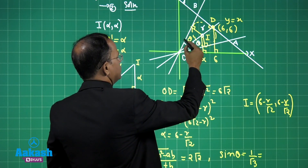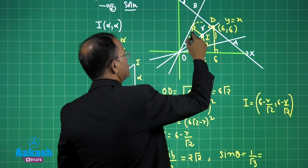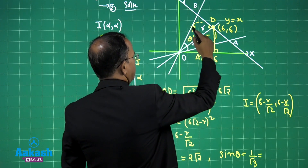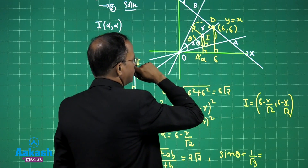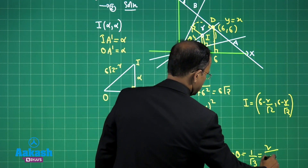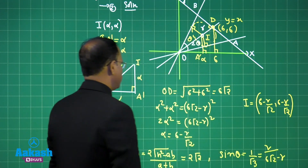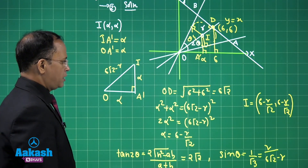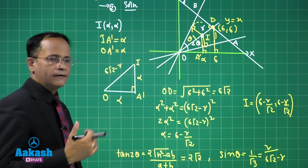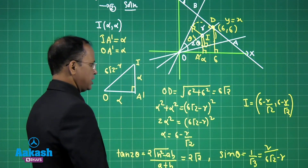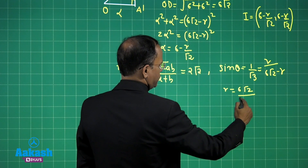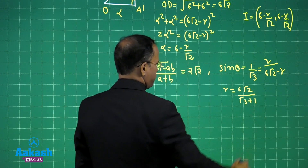From the diagram, using sin θ = r / OI = r / (6√2 − r), and with sin θ = 1/√3, we can solve for r. This gives r = 6√2 / (√3 + 1).